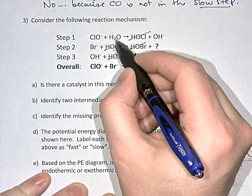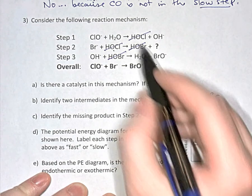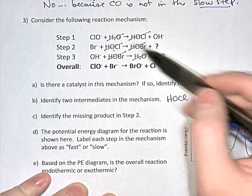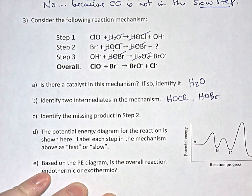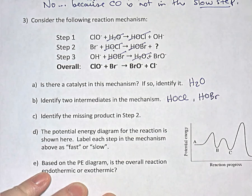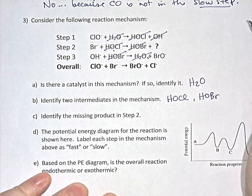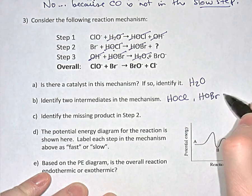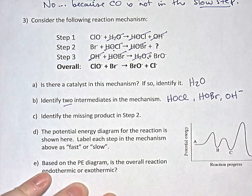Water in step one is a reactant, and water in step three is a product — so we cancel it out. Since water was a reactant first and a product later, water was a catalyst in the mechanism. The hydroxide ion was produced in step one and is a reactant in step three, so the hydroxide ion is another intermediate. There are actually three intermediates in this mechanism.